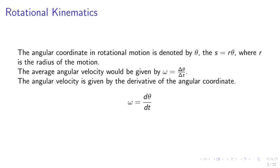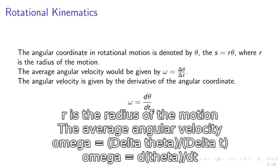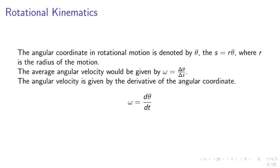Rotational Kinematics. The angular coordinate in rotational motion is denoted by theta, where s equals r times theta, and r is the radius of the motion. The average angular velocity is given by omega equals delta theta over delta t. The angular velocity is given by the derivative of the angular coordinate: omega equals d theta over dt.